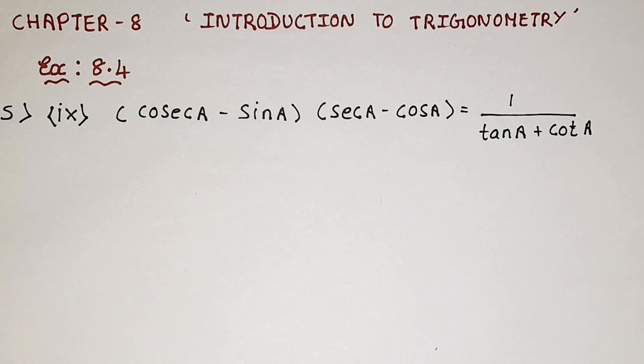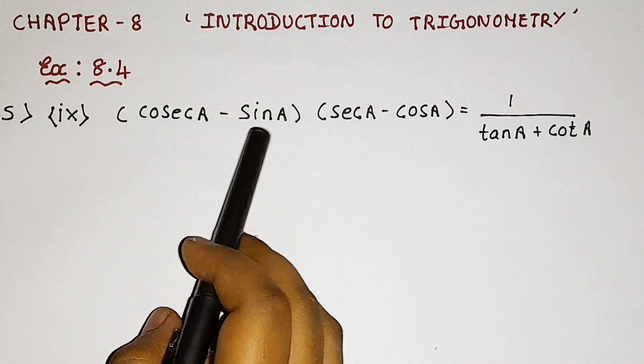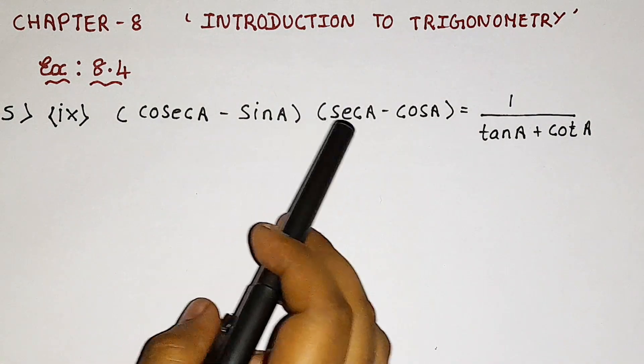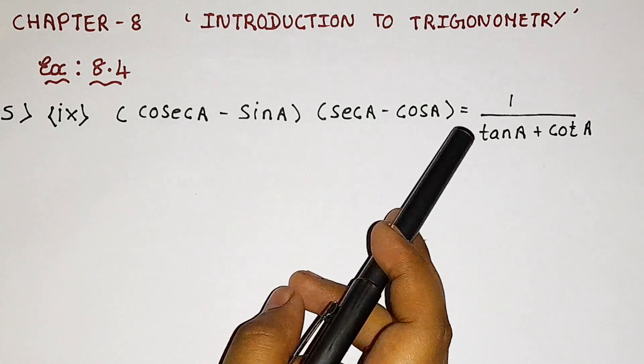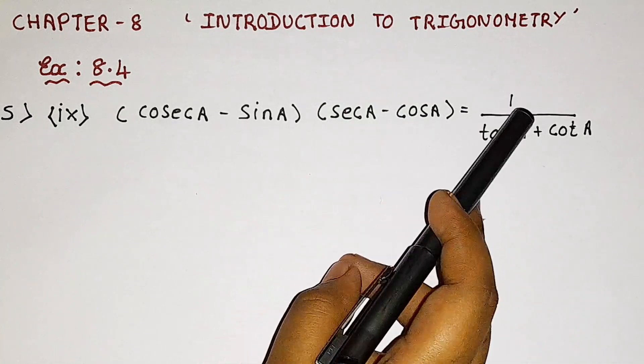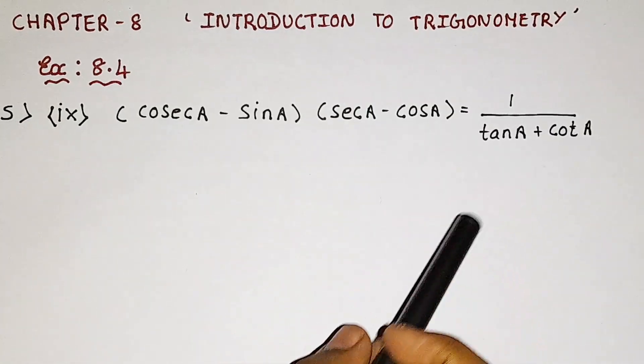Now let's read the question. cosecant A minus sin A, bracket, secant A minus cos A, is equal to 1 by tan A plus cot A.